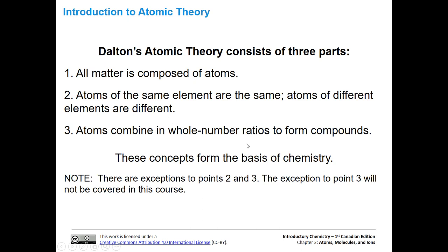Let's talk about Dalton's atomic theory. It's composed of three parts. The first is that all matter is composed of atoms. Atoms of the same element are the same, and atoms of different elements are different. That's going to become important when we look at the periodic table. Also, atoms combine in whole number ratios to form compounds.